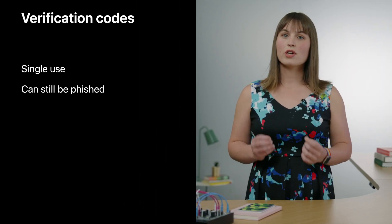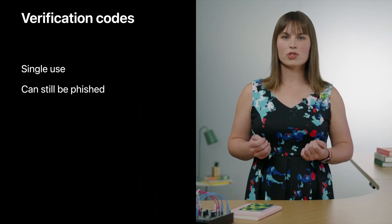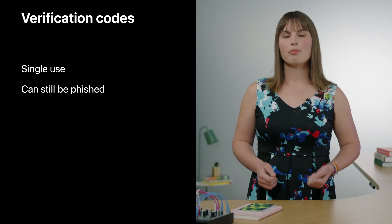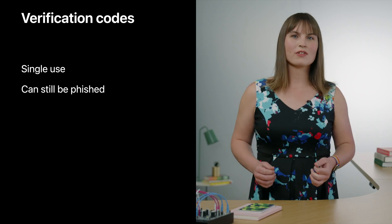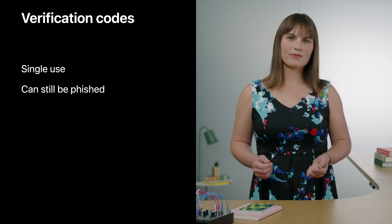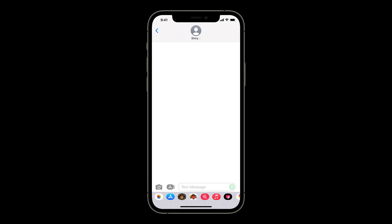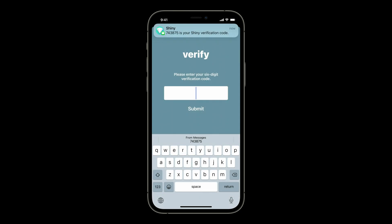An essential feature of these codes is that they're single use. Since they're not intended to be memorized or stored, they're not susceptible to reuse like passwords are. Verification codes do still require a human to enter the code though, so they're still prone to phishing in the same way that passwords are. The most common way, by far, that verification codes are delivered is with SMS. Almost everyone who has a cell phone can receive a text message, and people understand sending and receiving texts. Autofill made it even easier to use these codes — just one tap fills a code into any text field.